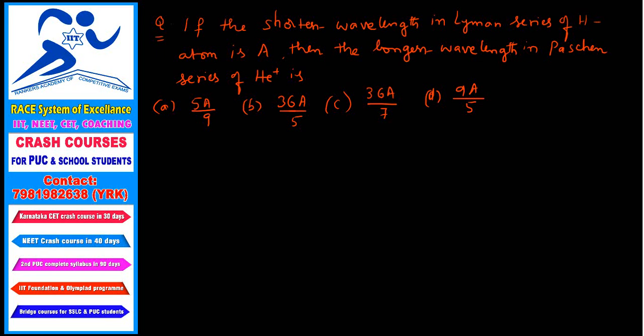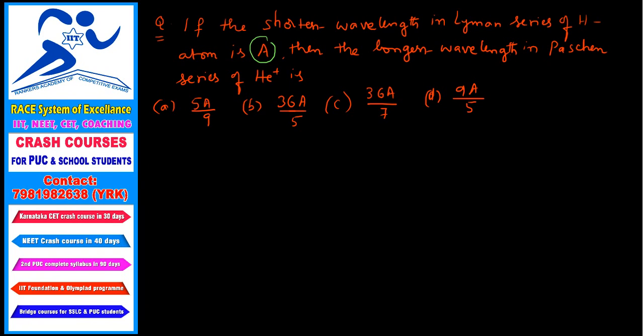If the shortest wavelength in Lyman series of hydrogen atom is A, then the longest wavelength in Paschen series of helium is not hydrogen.